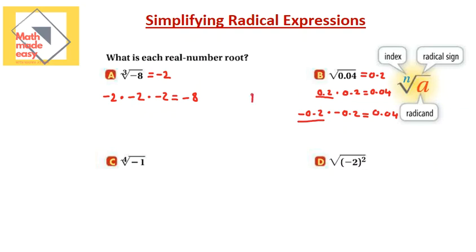Let's agree on something: 0.2 is the positive root, called the principal root. Negative 0.2 is called the negative root. If they give you this question, they are asking for the principal root only, so your answer should be 0.2. If they want the negative solution, they would write a negative square root of 0.04, which equals negative 0.2. The square root of 0.04 does have two solutions, but the positive one is the principal solution — that's what you write when simplifying unless told otherwise.